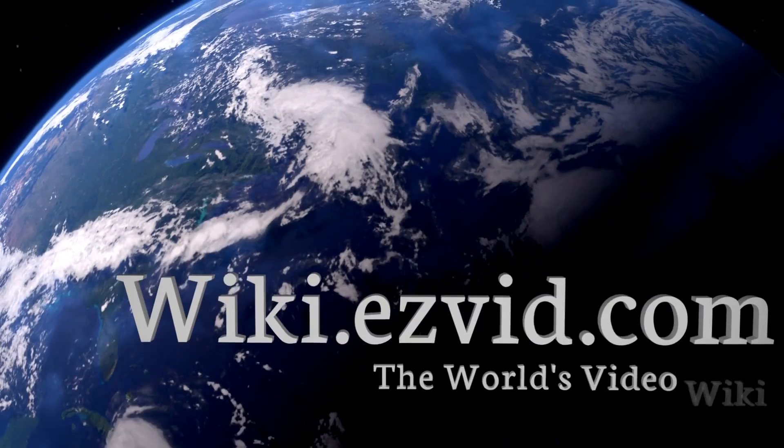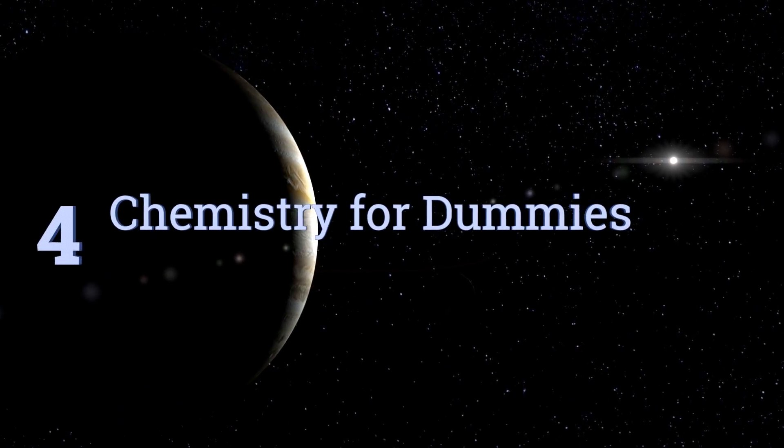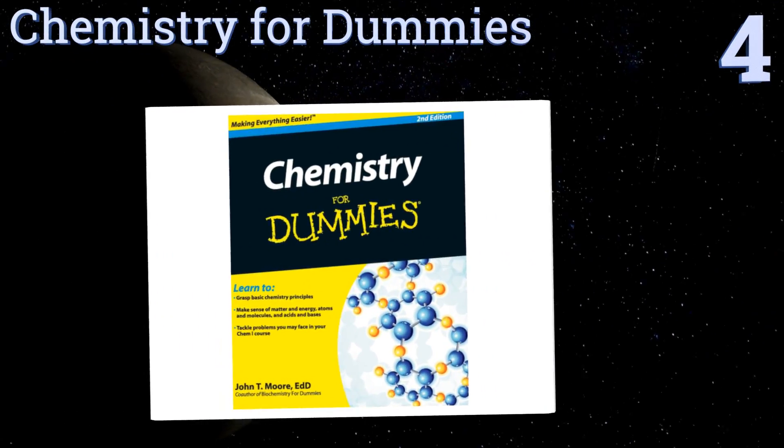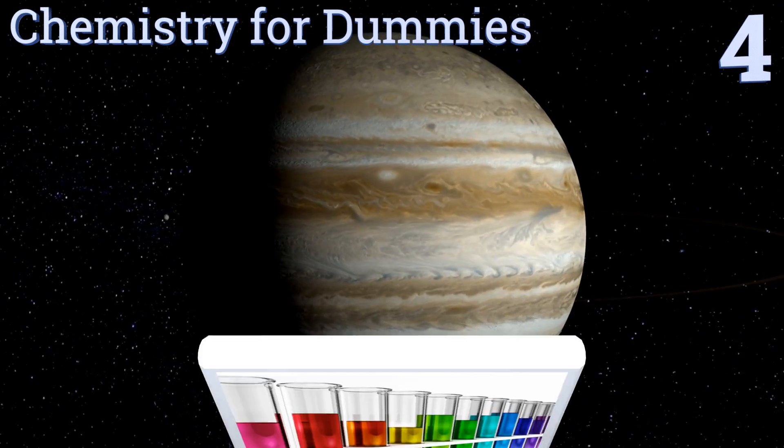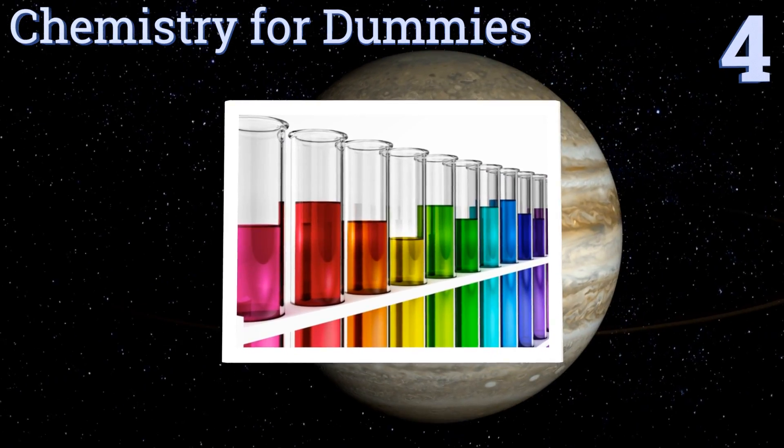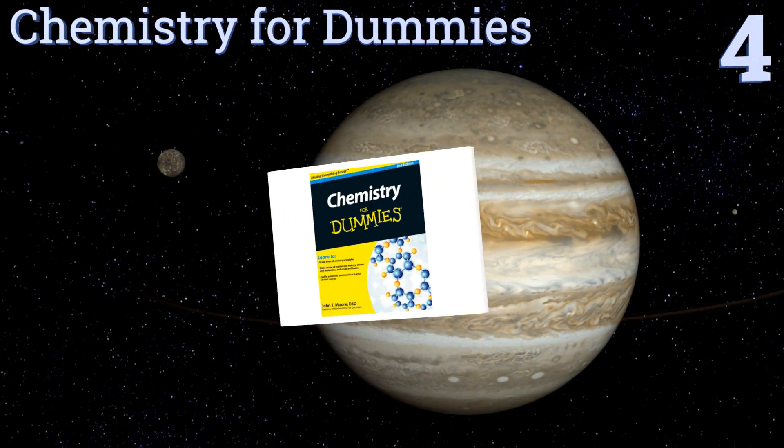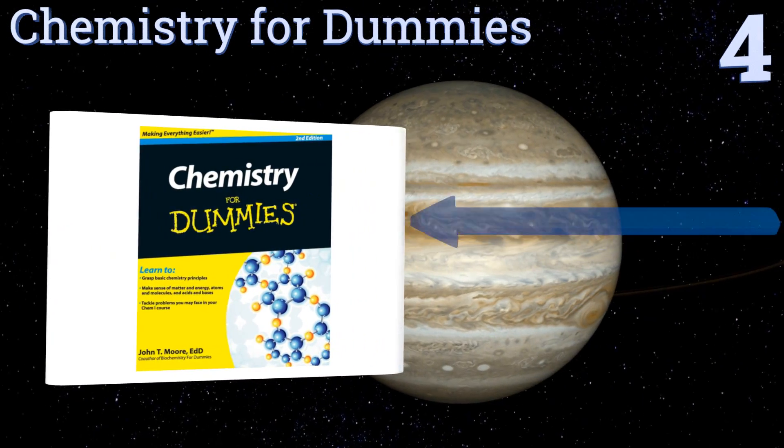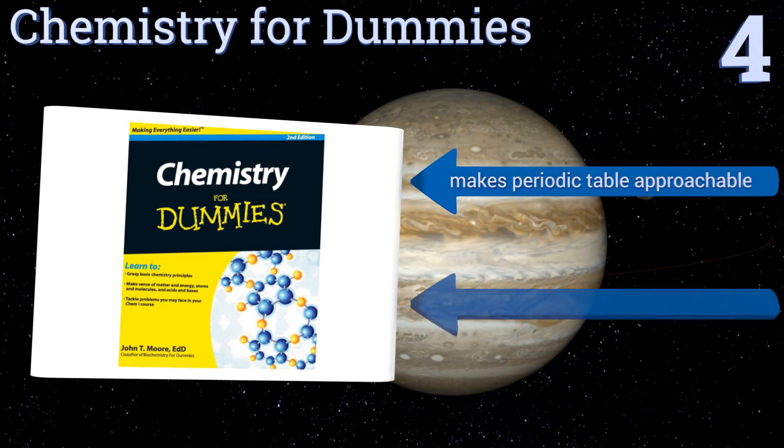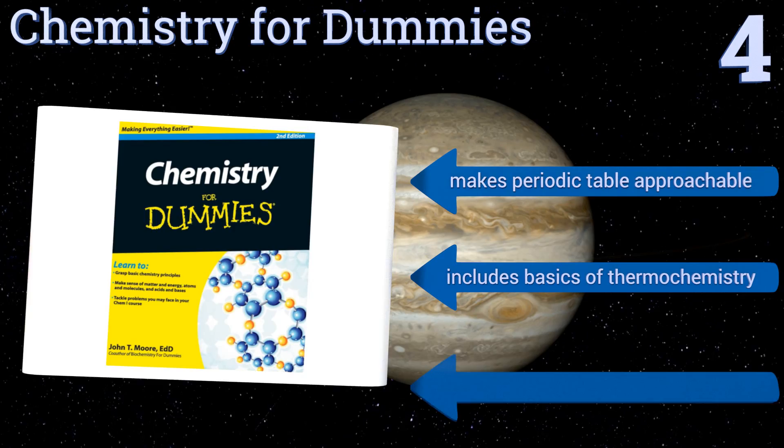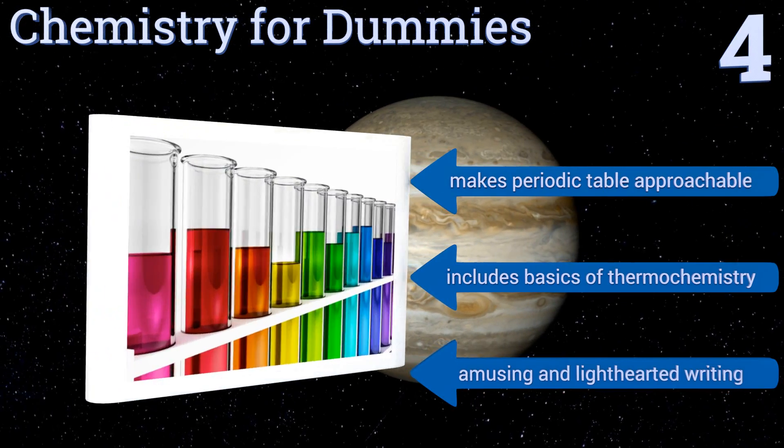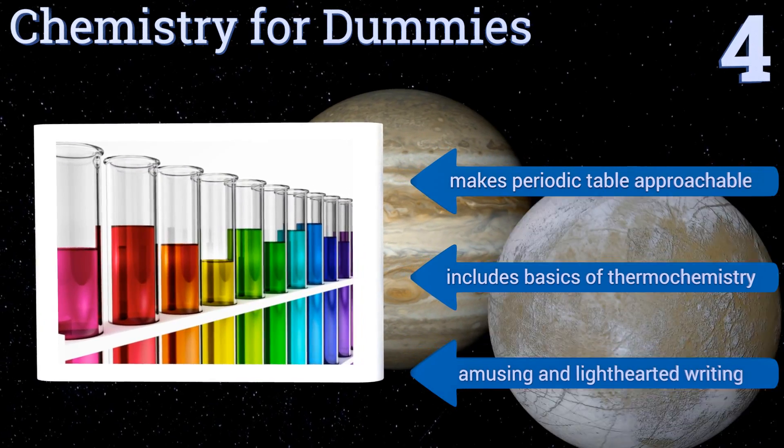At number four, while reading it won't make you ready to start a graduate level program, John T. Moore's Chemistry for Dummies will give you a decent grounding in the basic concepts of the topic such as the nature of atoms, acids, elements, and molecular structures. It makes the periodic table approachable and includes the basics of thermochemistry. It's written in an amusing and lighthearted manner.